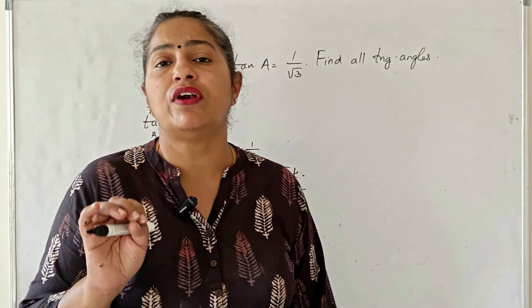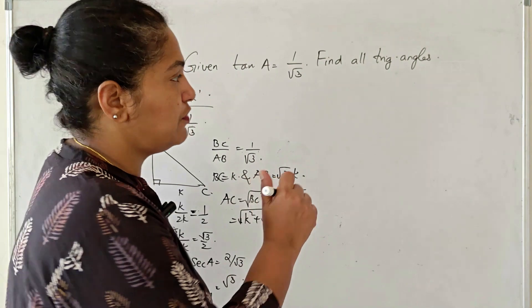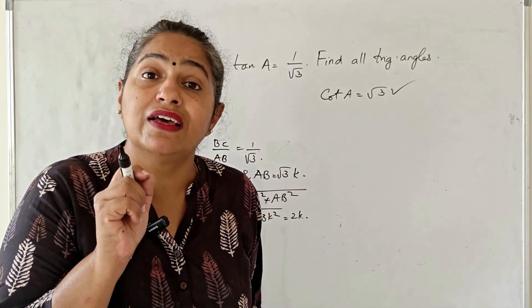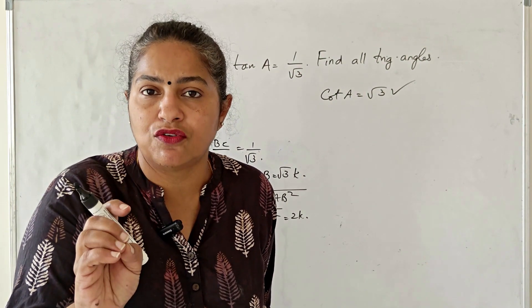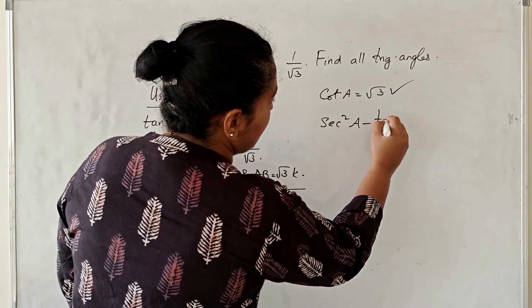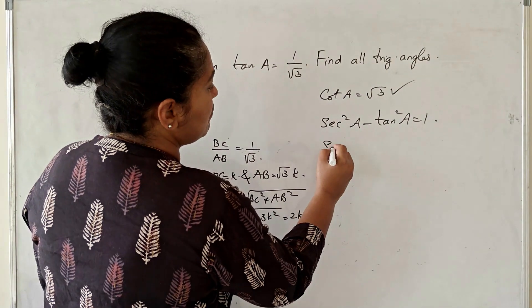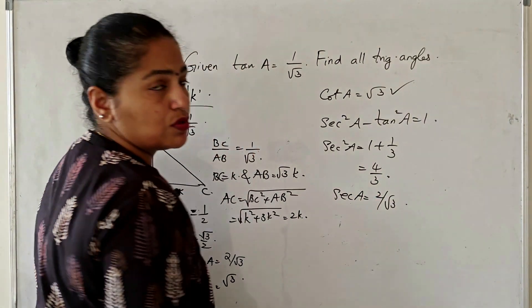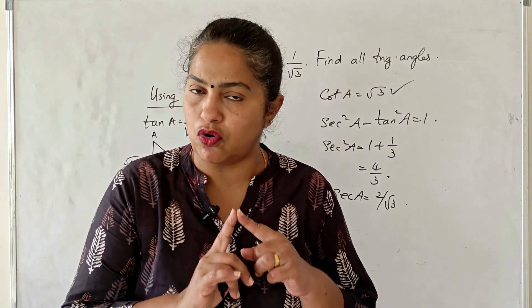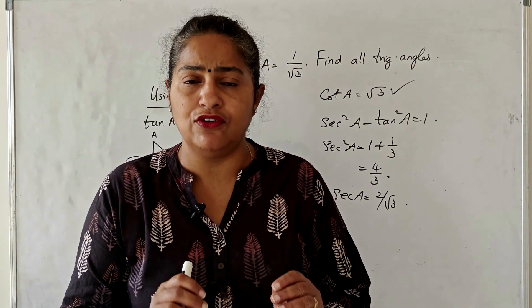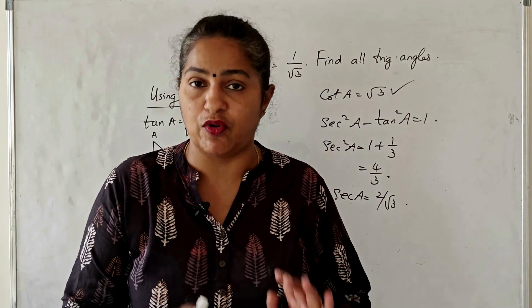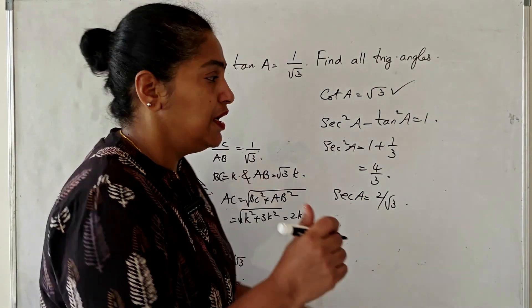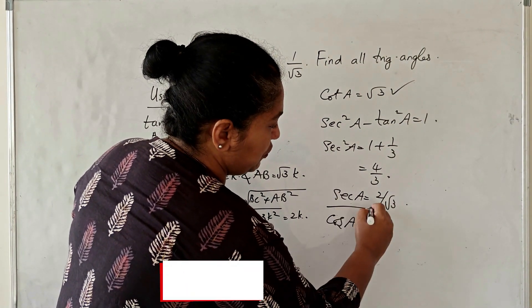Since tan a = 1/√3, the first thing is its reciprocal: cot a = √3. Now using the identity sec²a - tan²a = 1, we get sec²a = 1 + tan²a = 1 + 1/3 = 4/3, so sec a = 2/√3. We take only the positive square root because all trigonometric ratios between 0° and 90° are positive. Then cos a = 1/sec a = √3/2.